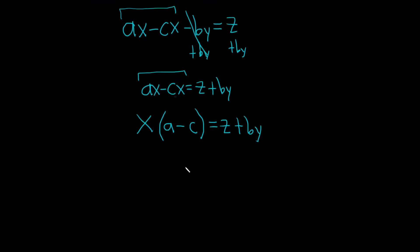Almost done. The very last step is to divide. And the reason we divide is because x is being multiplied by this entire a minus c. So we divide by the entire piece. And what you do to one side, you have to do to the other side. So you divide the entire right-hand side by a minus c. These cancel, and so we get x equals z plus by.